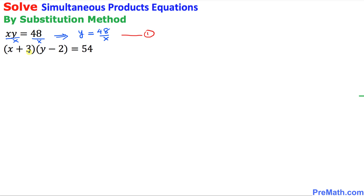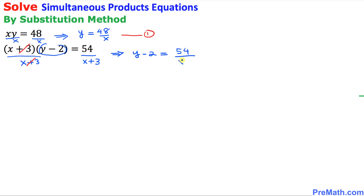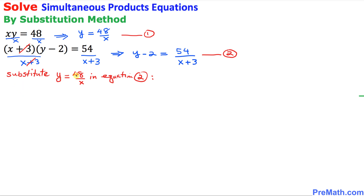Now let's focus on the second equation: x plus 3 times y minus 2 equals 54. Here I am going to isolate the y minus 2 part, so I am going to divide both sides by x plus 3. This x plus 3 cancels, and we simply end up with y minus 2 equals 54 over x plus 3. I am going to call this equation number two.